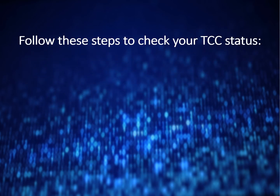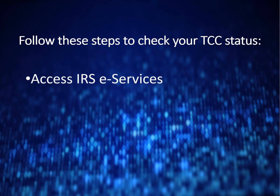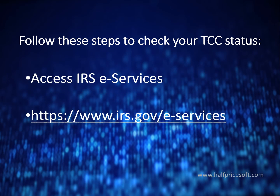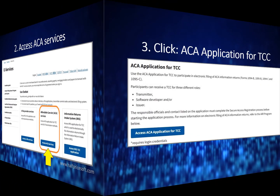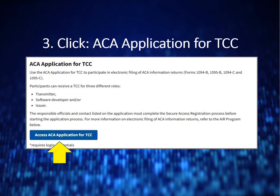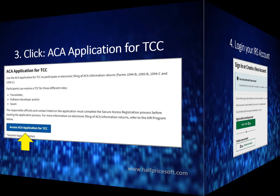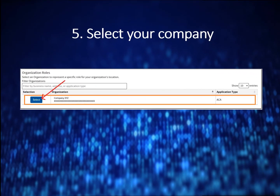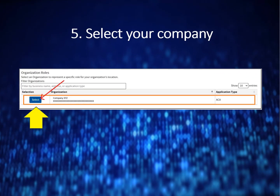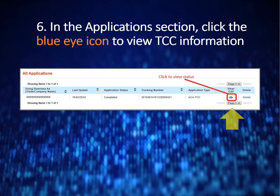Follow these steps to check your TCC status. Start by accessing eServices. Access ACA services. Click ACA application for TCC. Log in to your IRS account. Select your company. In the Applications section, click the blue icon to view TCC information.